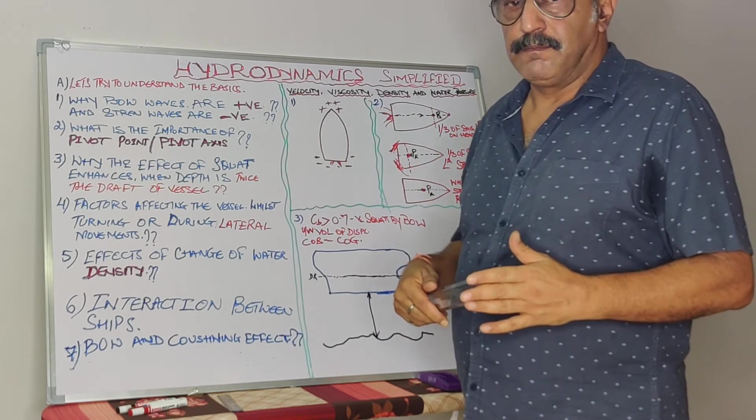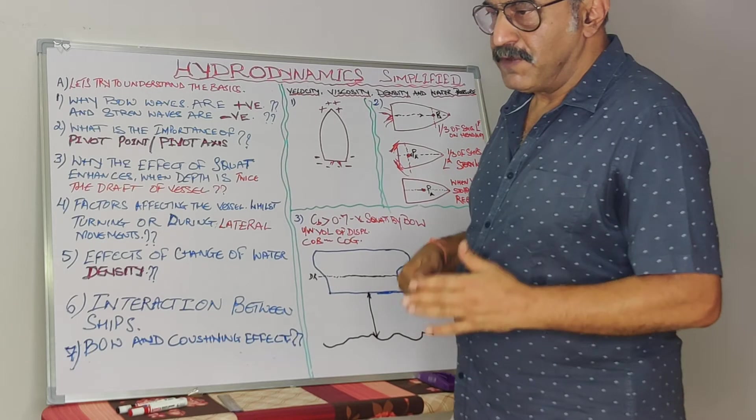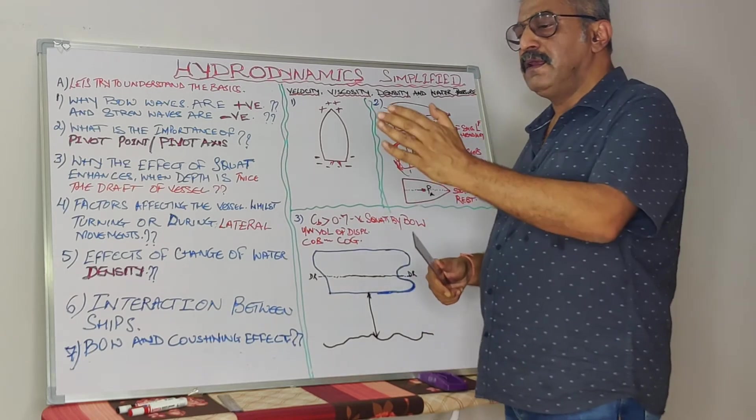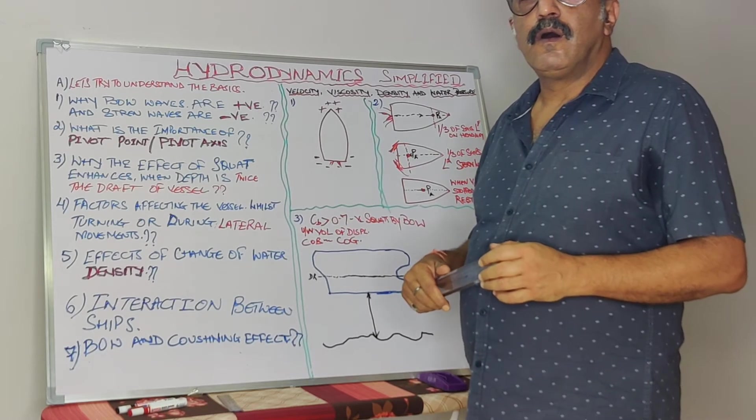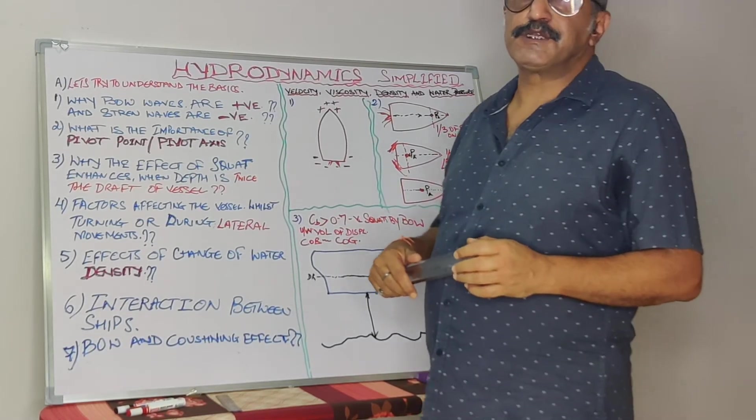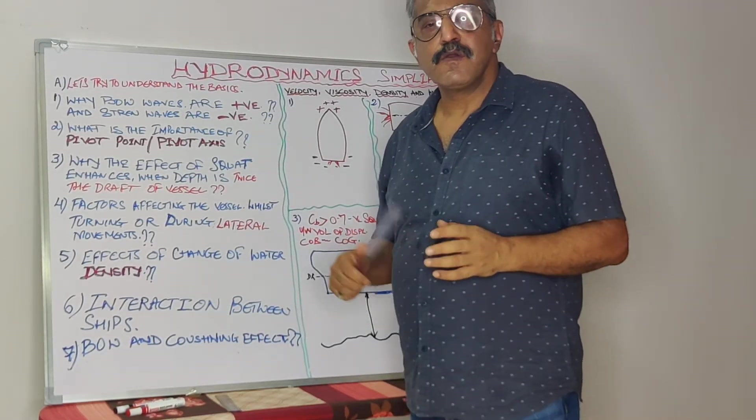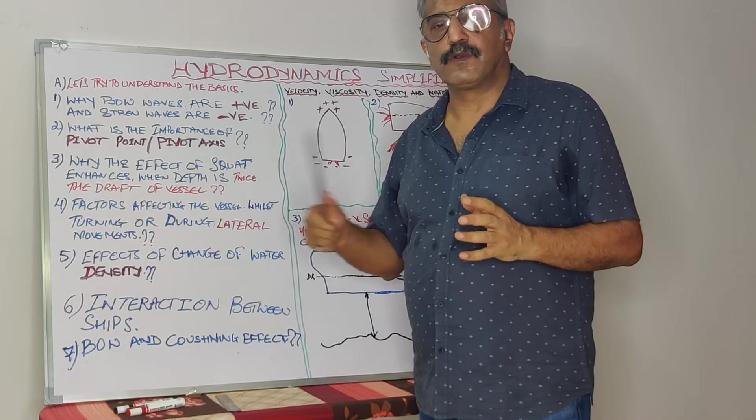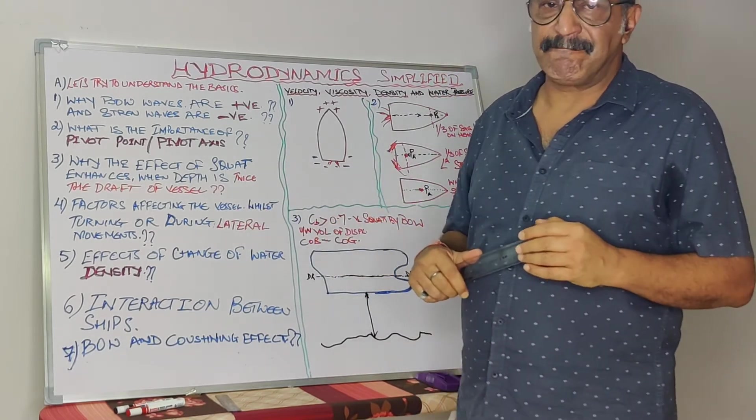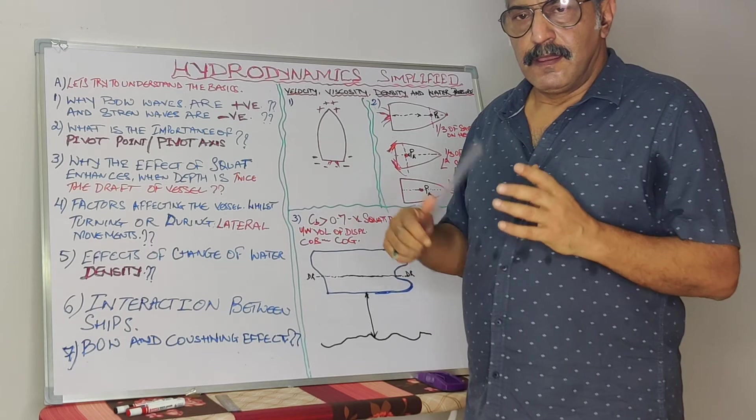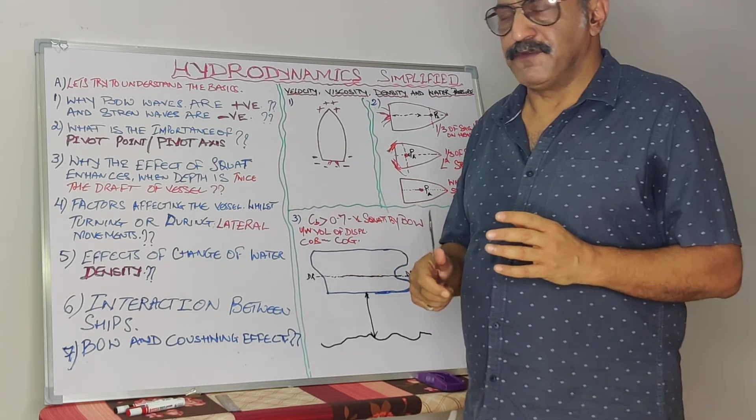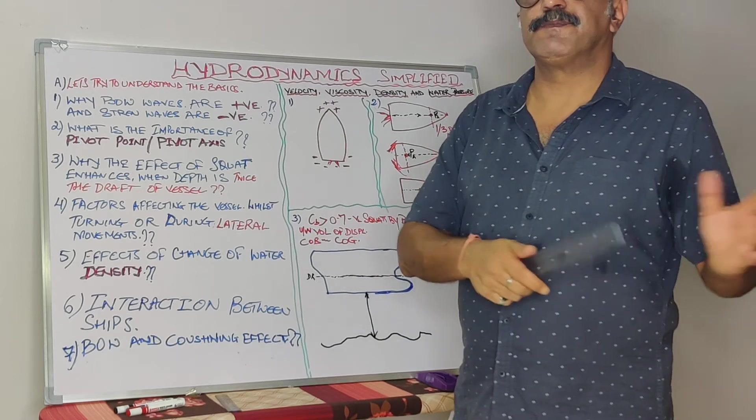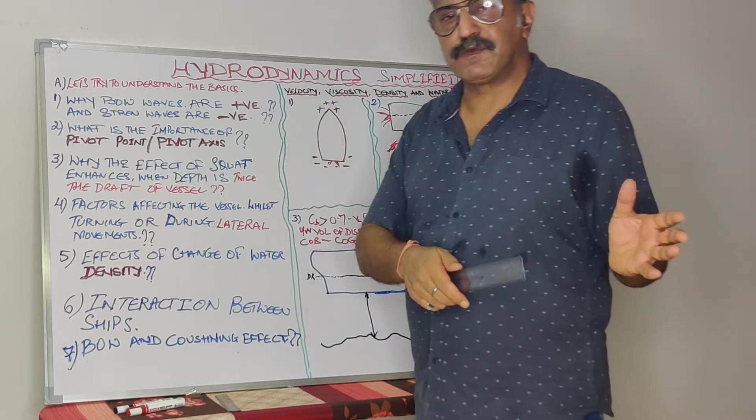When the vessel is making a headway, the pivot point moves gradually to approximately one-third of the vessel's distance from the bow. In other words, one-third from the bow of the total length of the vessel, approximately. And when the vessel is falling astern or when it's astern, the same pivot point moves approximately one-third of the distance from the stern.